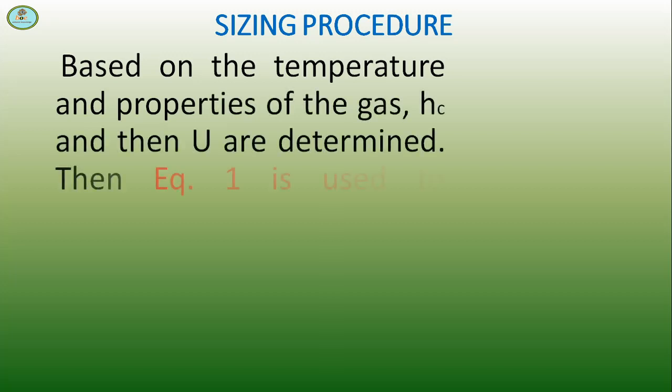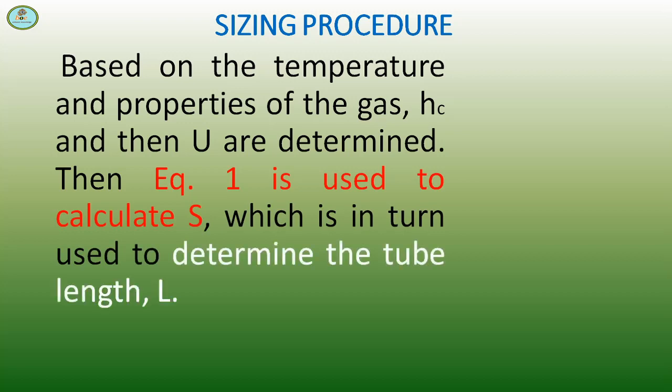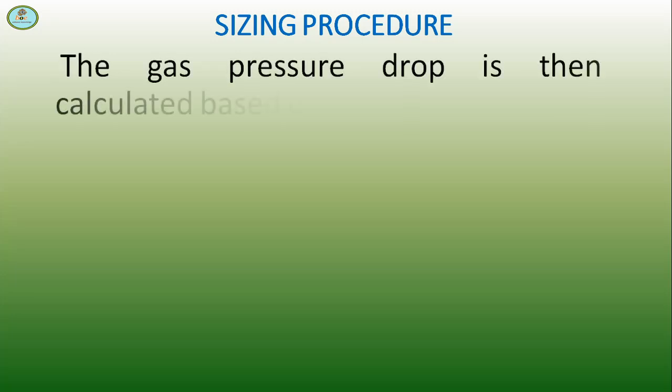Based on the temperature and properties of the gas, Hc and then U are determined. Then equation 1 is used to calculate S, which is in turn used to determine the tube length L. The gas pressure drop is then calculated based on geometry.